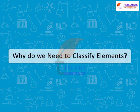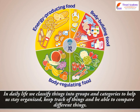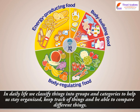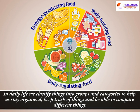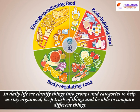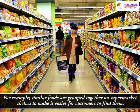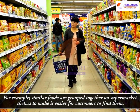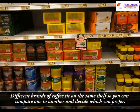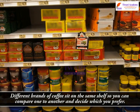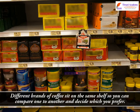Why do we need to classify elements? In daily life, we classify things into groups and categorize to help us stay organized, keep track of things and be able to compare different things. For example, similar foods are grouped together on supermarket shelves to make it easier for customers to find them. Different brands of coffee sit on the same shelf so you can compare one to another and decide which you prefer.